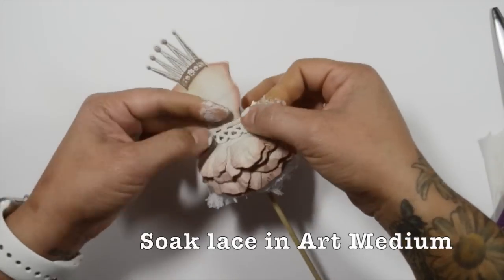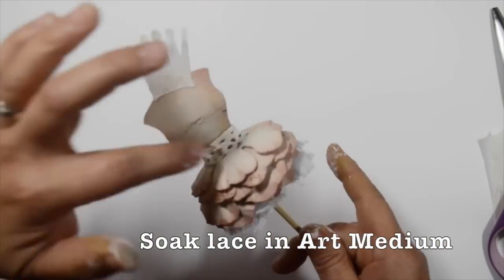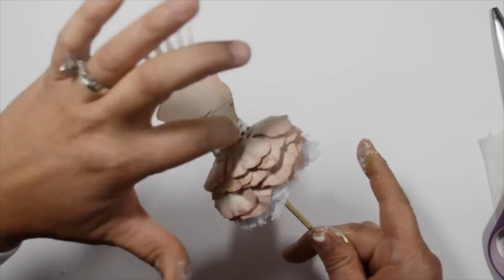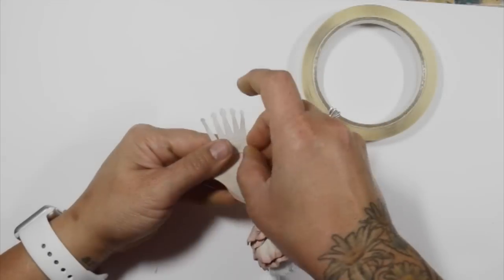Then I soaked some lace in some girly grunge art medium and just laid it across the middle and let that dry, and it'll stiffen the lace.